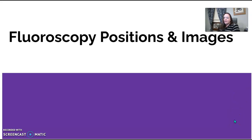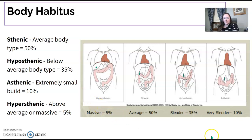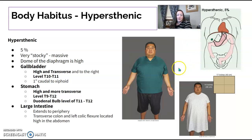A lot of you have been asking about fluoroscopy imaging and ways to figure out where the barium is sitting, so here's a quick review on fluoroscopy positions and imaging. I'm going to start with body habitus because it's really important with stomach position, gallbladder position, and colon position. Reviewing body habitus is important because you should know how it affects where the anatomy lies.